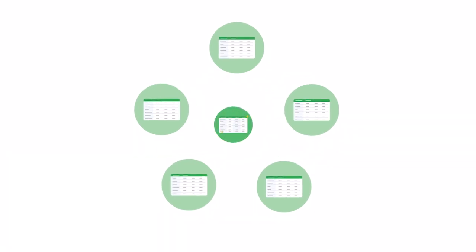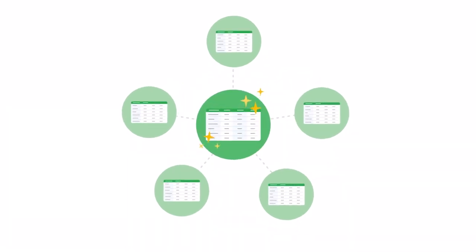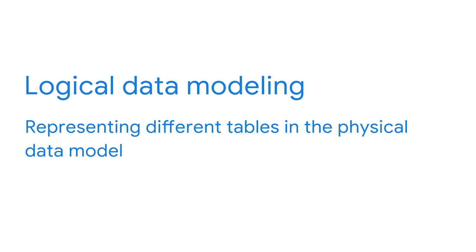Earlier, we learned about what considerations go into designing data warehouses. Based on the business needs and the shape of the data in our previous example, we created a dimensional model with a star schema — a process sometimes called logical data modeling. This involves representing different tables in the physical data model. In this video, we're going to learn more about what a schema needs to have for it to be functional. You will use your database schema to validate incoming data to prevent system errors and ensure that the data is useful, so it's important to consider the schema early on in any BI project.